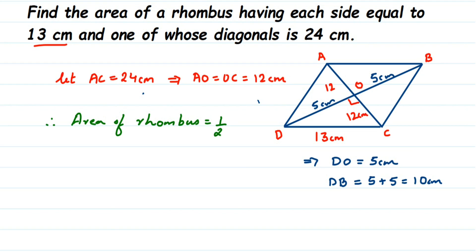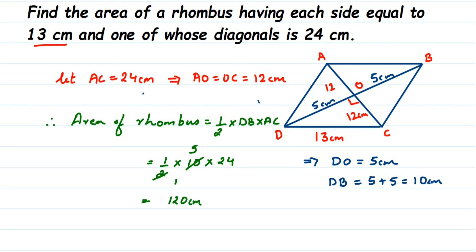Area of rhombus = (1/2) × DB × AC = (1/2) × 10 × 24. Simplifying: (1/2) × 10 = 5, and 5 × 24 = 120. So the area of the rhombus is 120 centimeters squared. I hope this question is clear. If you have any other questions or doubts, you can drop a comment. Thank you so much for watching.